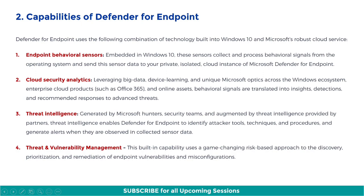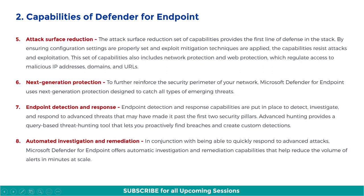Next capability is Threat and Vulnerability Management. This built-in capability uses a game-changing risk-based approach to the discovery, prioritization, and remediation of endpoint vulnerabilities and misconfigurations. Next, we have Attack Surface Reduction. The Attack Surface Reduction set of capabilities provides the first line of defense in the stack, ensuring configuration settings are properly set and exploit mitigation techniques are applied. This also includes network protection and web protection, which regulate access to malicious IP addresses, domains, and URLs.